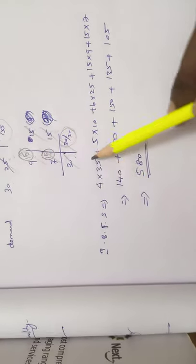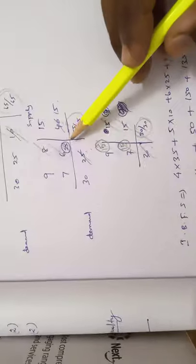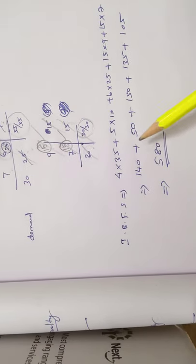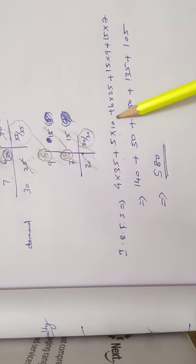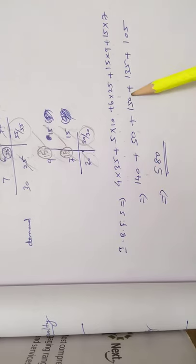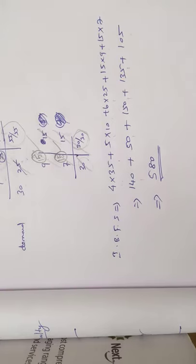The initial basic feasible solution using the Least Cost Method is: 4×35 + 5×10 + 6×25 + 9×15 + 7×15 = 140 + 50 + 150 + 135 + 105 = 580. This completes the problem.